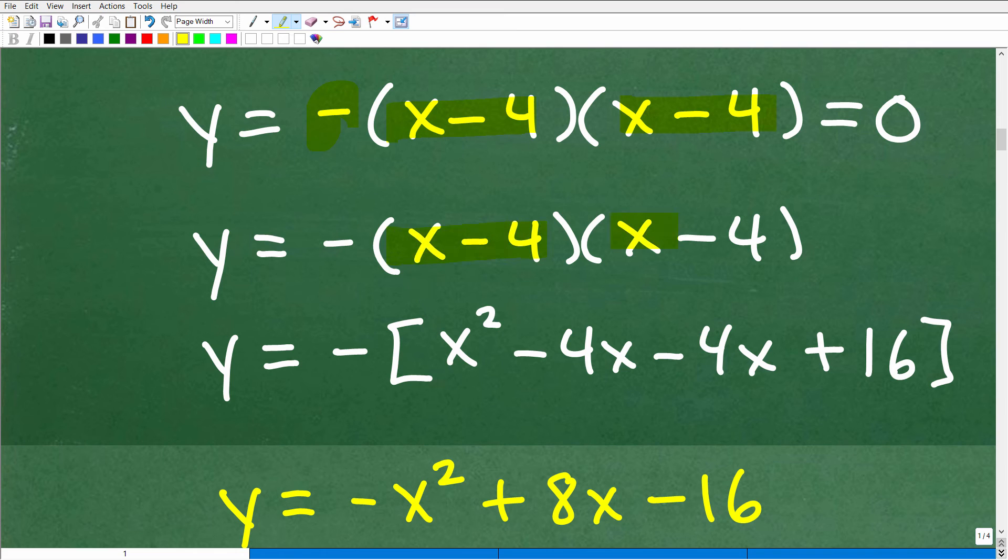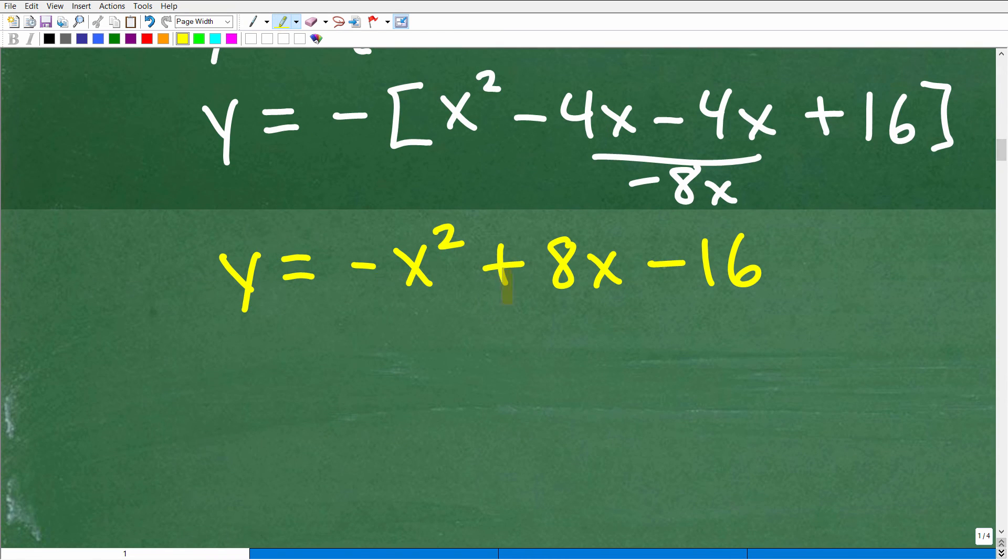And what I could do here is simply go ahead and expand this. I could take these two linear factors, multiply these together. So this would be x squared minus 4x minus 4x. This would be minus 8x plus 16. Then take that negative sign right here and multiply in. So you would end up with negative x squared plus 8x minus 16. So if you were to graph this, you would have that upside down parabola that bounces at 4.